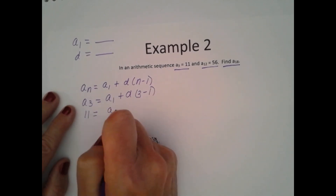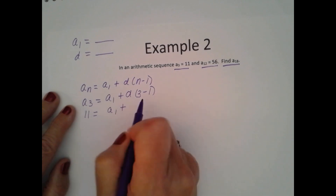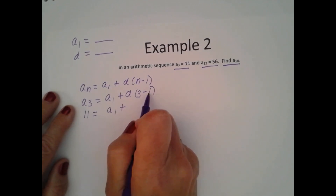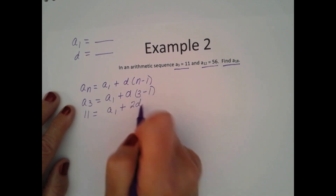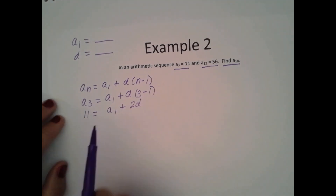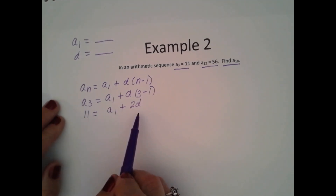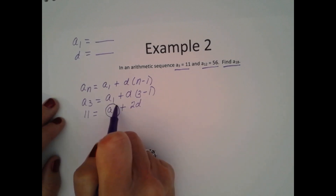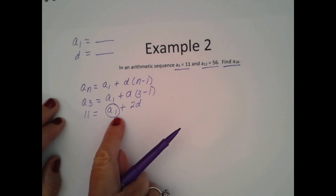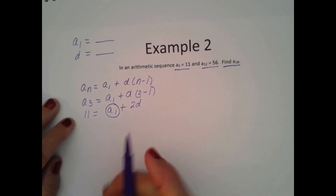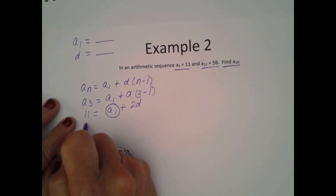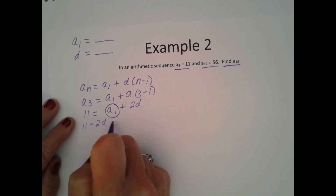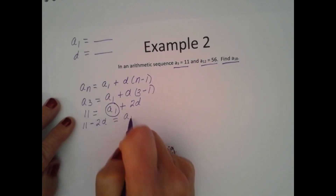A sub 1 is equal to A sub 1 plus, and then I have 3 minus 1, which gives me 2D. In this situation, I can see that I have two variables, so I need to solve for one of them. I'm going to solve for A sub 1. So I would have 11, then subtract 2D from both sides: 11 minus 2D gives me A sub 1.